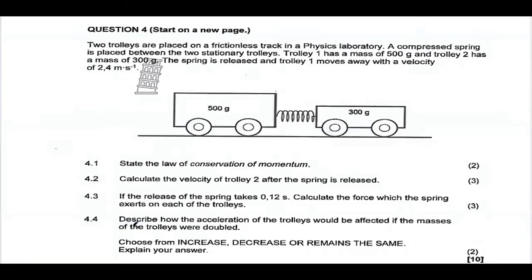We have 4.3. It says, if the release of the spring takes 0.12 seconds, calculate the force which the spring exerts on each of the trolleys. What are we given here? We can see that we are given our change in time 0.12 seconds. And then we are to calculate the force.